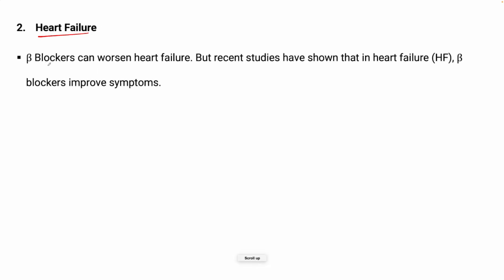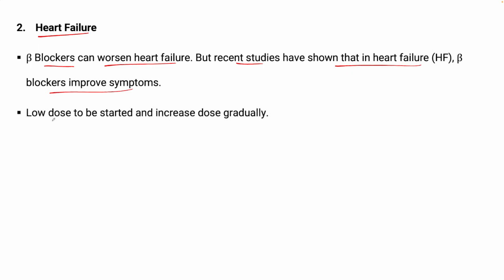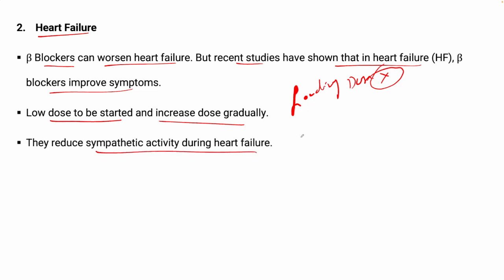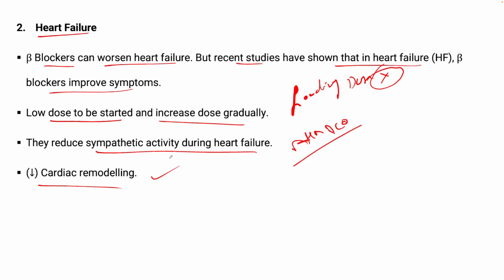Now regarding heart failure: beta blockers can worsen heart failure, but recent studies have shown that in heart failure, beta blockers improve symptoms. Low dose should be started and increased gradually — you cannot use the loading dose. Beta blockers reduce sympathetic activity during heart failure, so heart rate increase and cardiac output increase are decreased. They also decrease cardiac remodeling — the group of molecular, cellular, and interstitial changes manifesting as changes in size, mass, and function of the heart after injury.